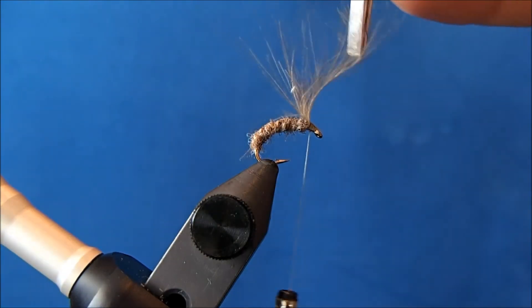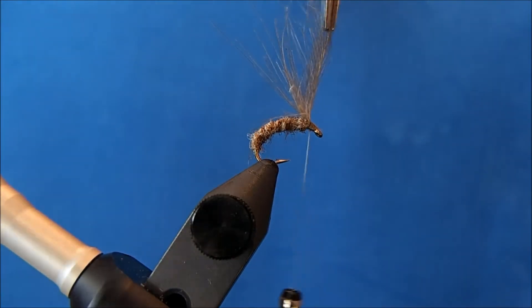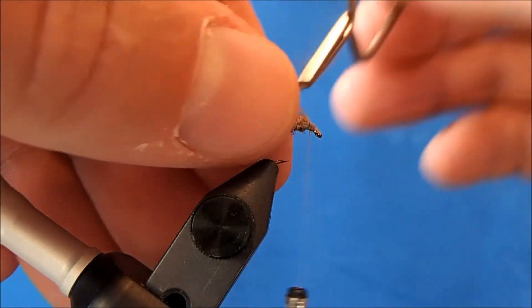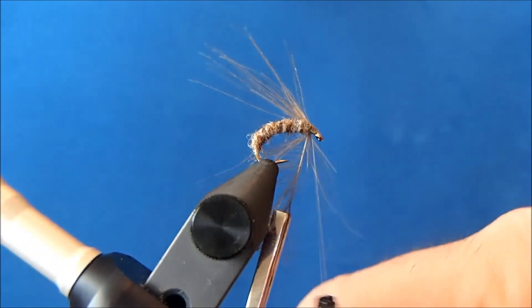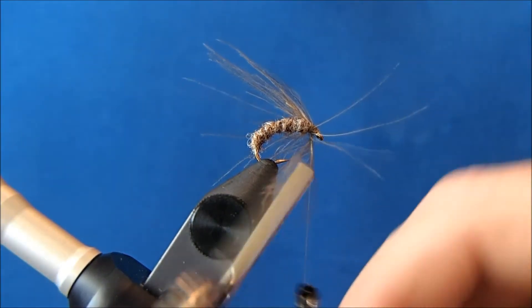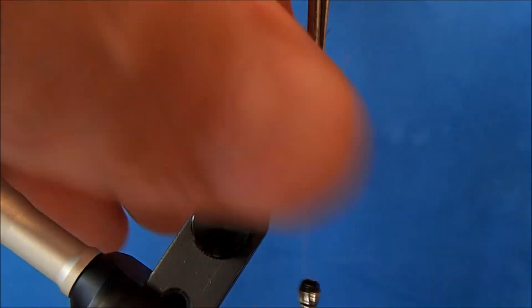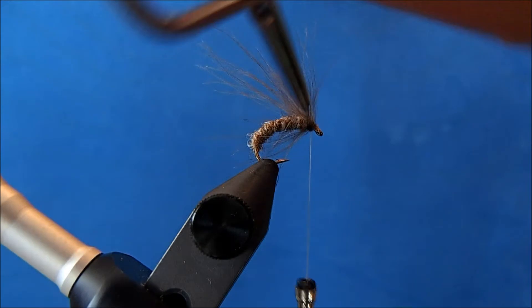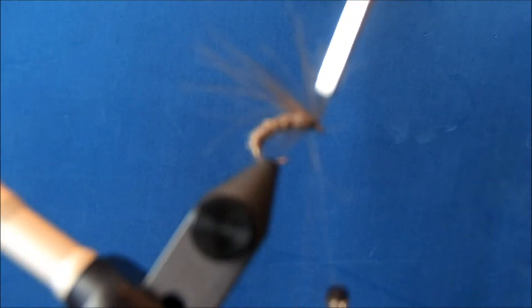I want to stroke these fibers back towards the end of the pattern. So I'll wet my fingers a little bit, and that'll help them lay back. And I'll take some turns here, maybe three, and then I'll come back and tie it off.